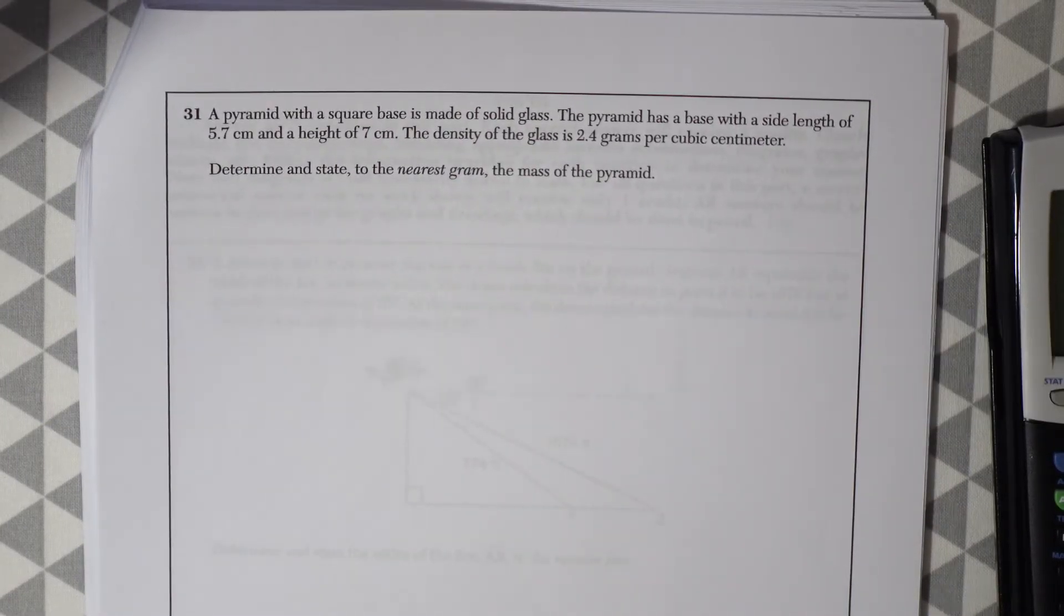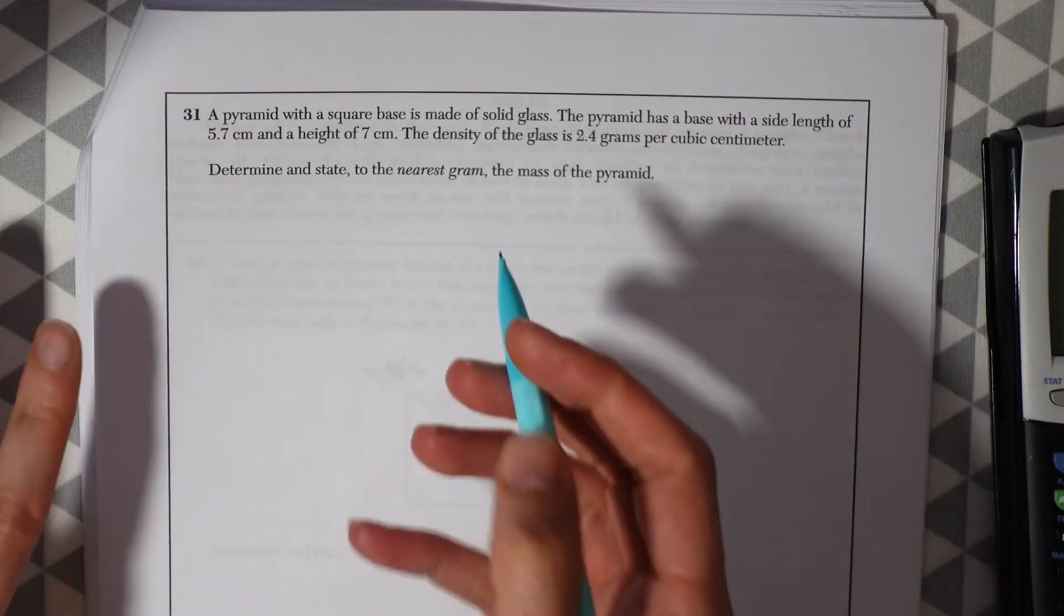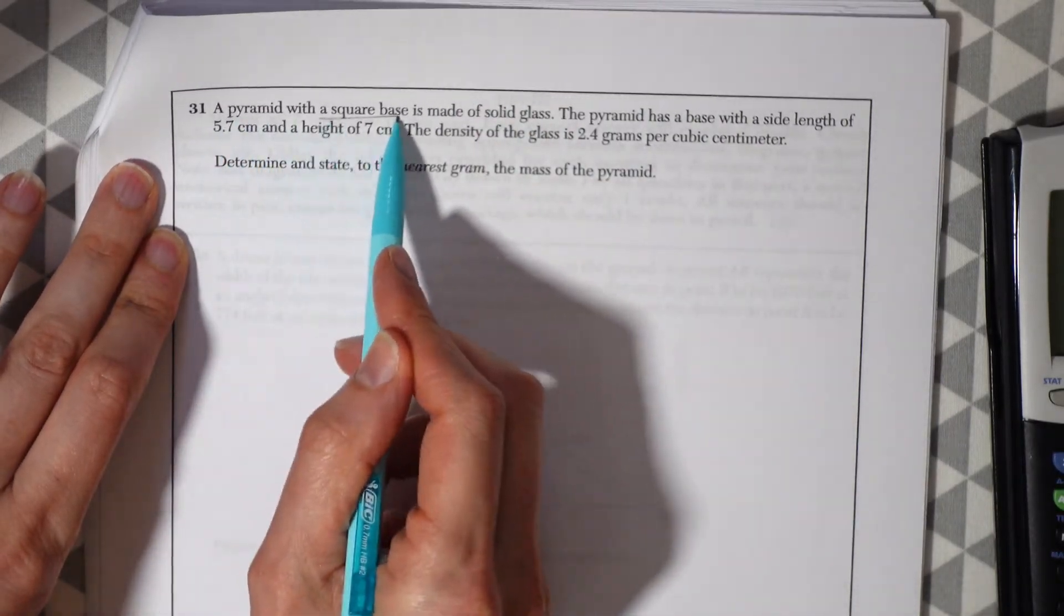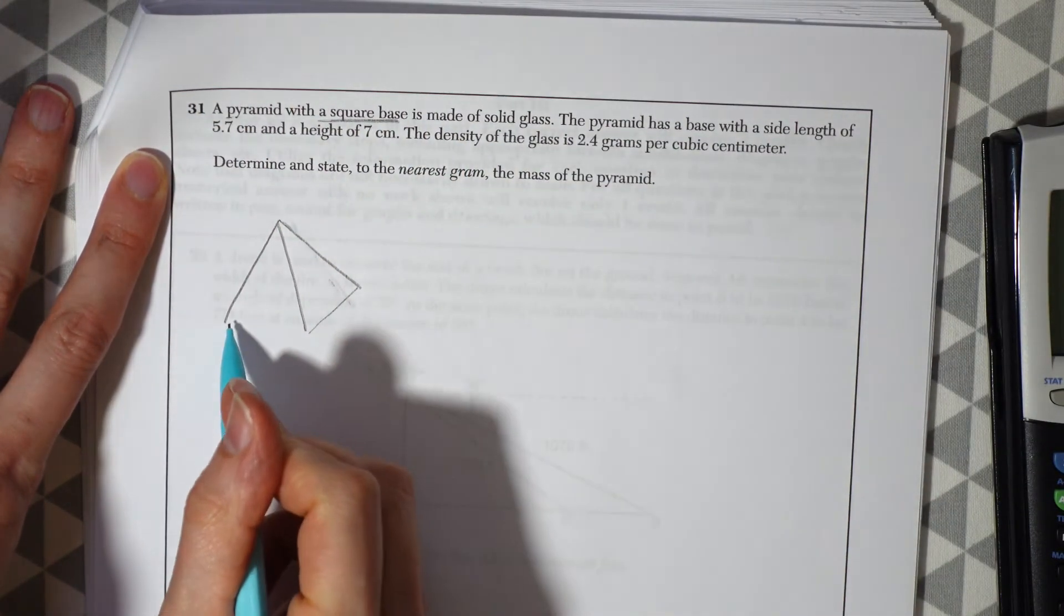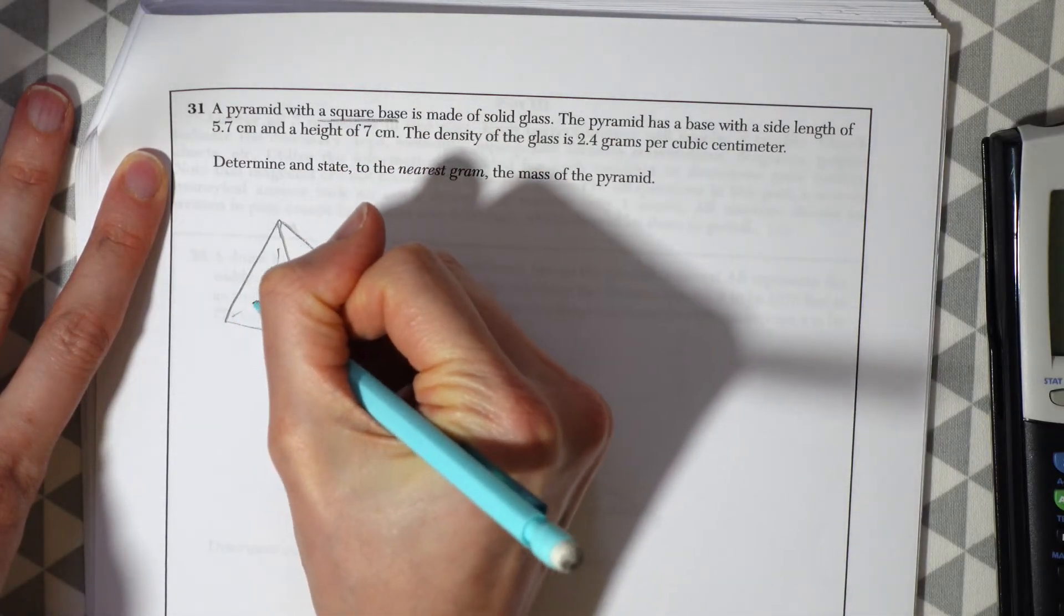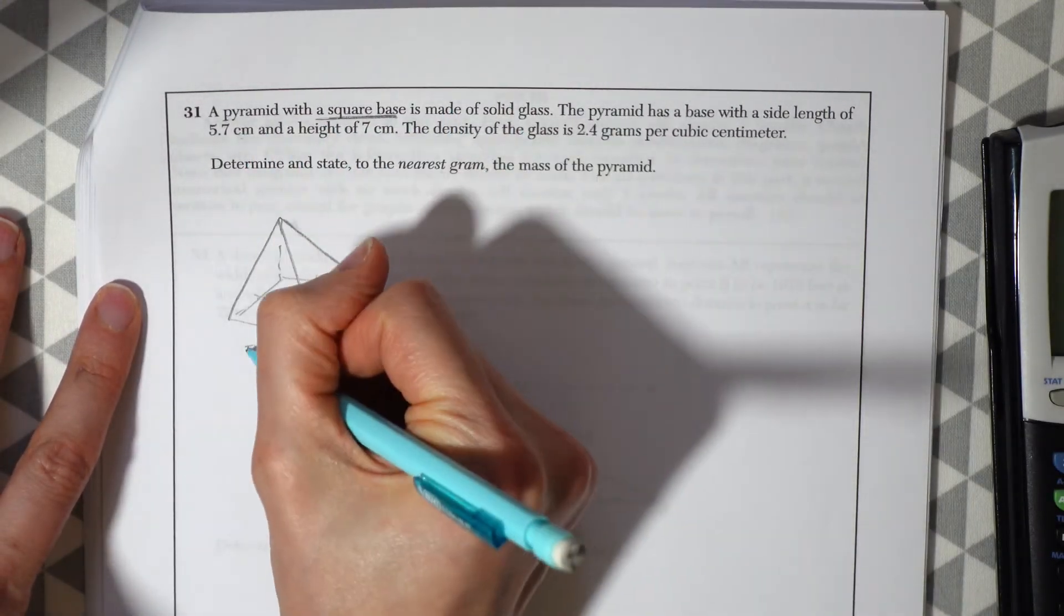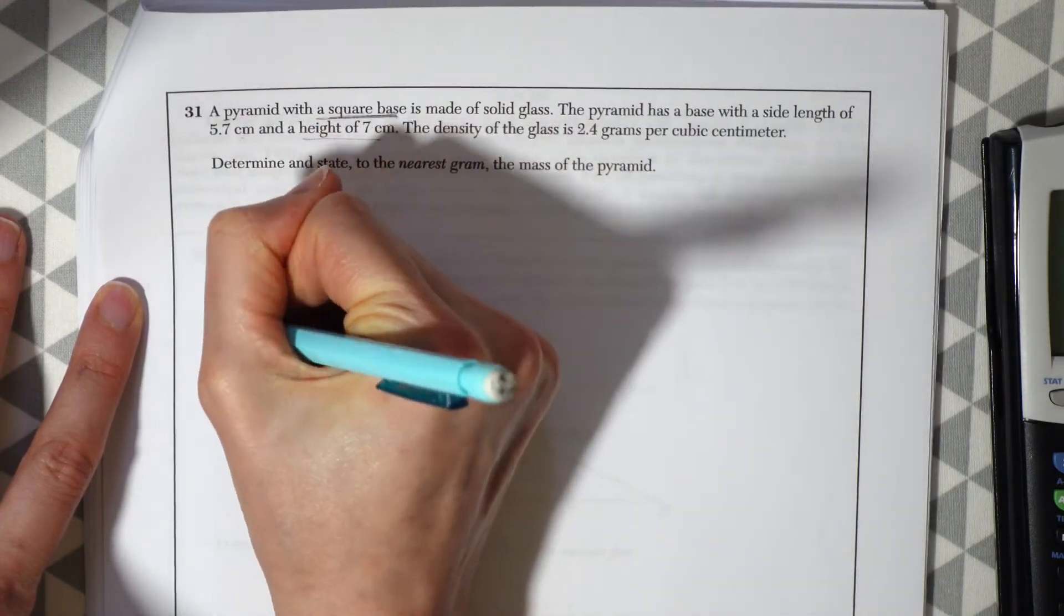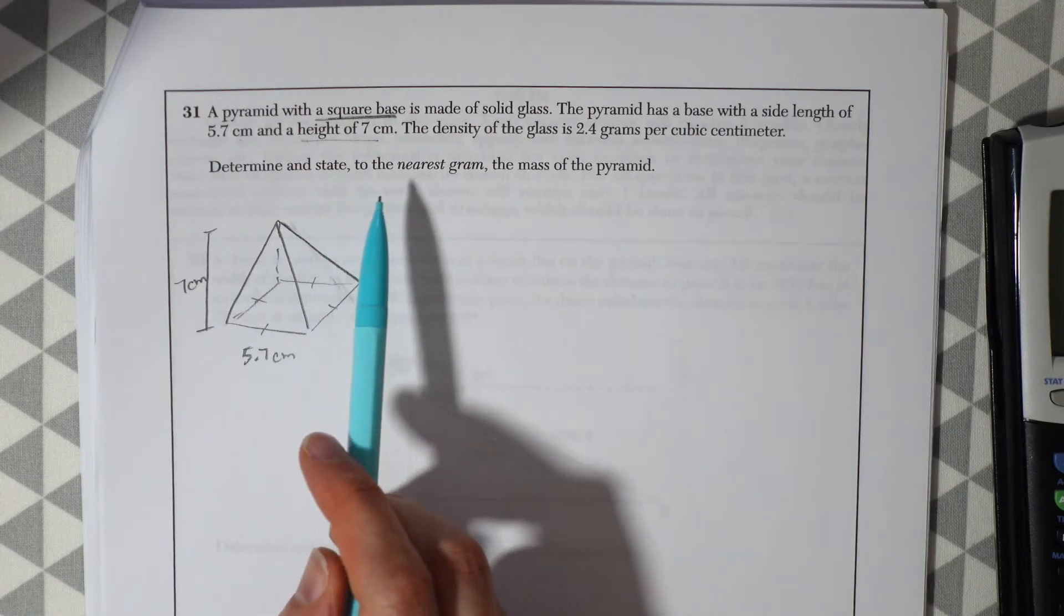Question 31. A pyramid with a square base is made of solid glass. The pyramid has a base with a side length of 5.7 centimeters and a height of 7 centimeters. The density of the glass is 2.4 grams per cubic centimeter. Determine and state to the nearest gram the mass of the pyramid. So first let's draw out this pyramid and notice it said a square base. So with the square base we know it's going to be equal on all sides of this base.